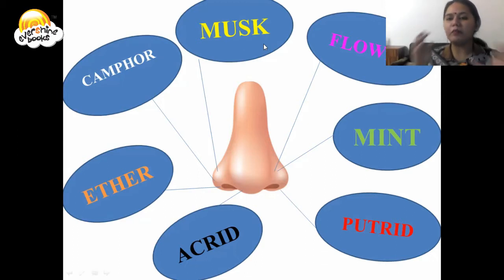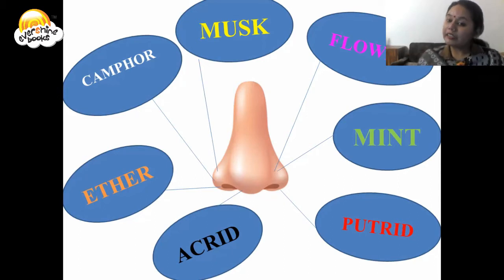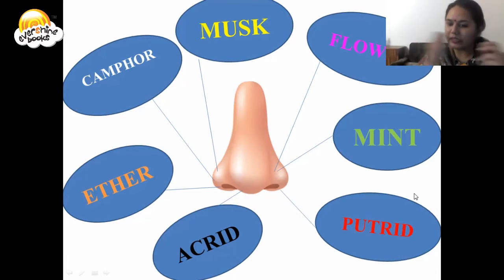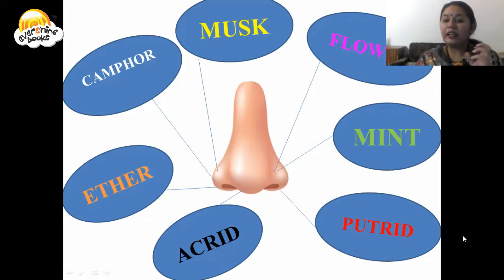The next smells our nose can sense are: flower, and mint — also called pudina in Hindi. It's a green plant, and when someone plucks its leaves to make chutney, the entire house fills with a very pleasant smell.